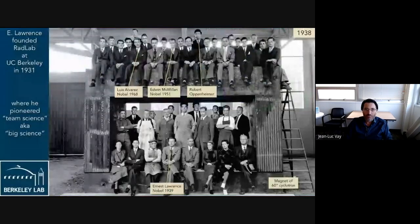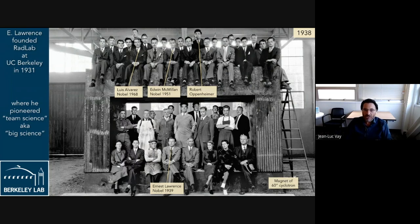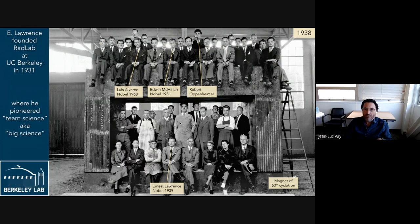We're at Berkeley Lab, founded by Lawrence. In 1931, the Rad Lab became Berkeley Lab and is known for big science. You can see a picture from 1938 on top of the magnet of a 60-inch cyclotron — a type of particle accelerator that Lawrence invented. Lawrence got the Nobel Prize in 1939 for this invention. You also see Edwin McMillan, who got his Nobel in 1951, and Robert Oppenheimer.